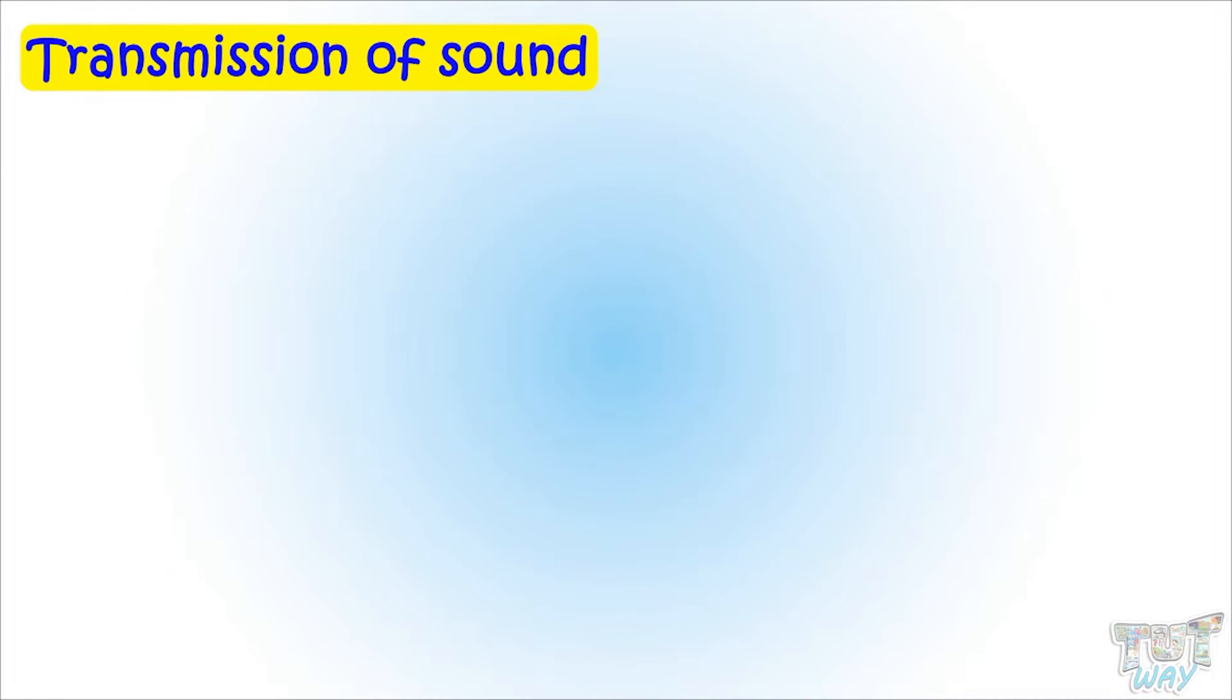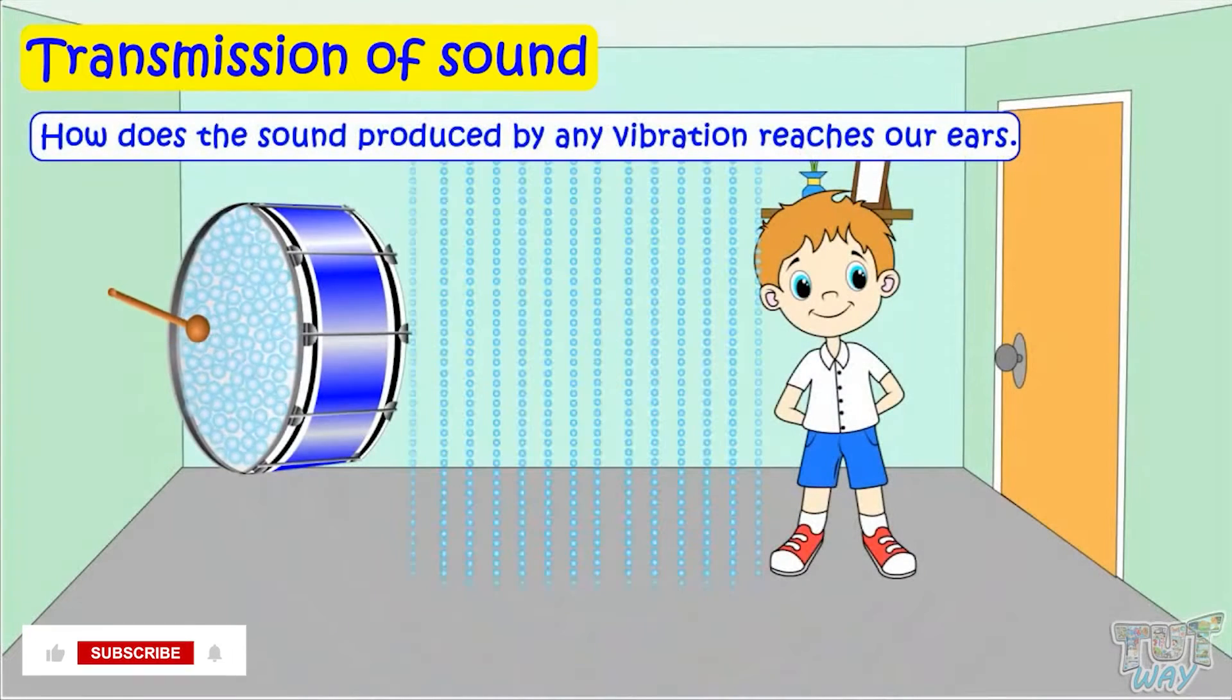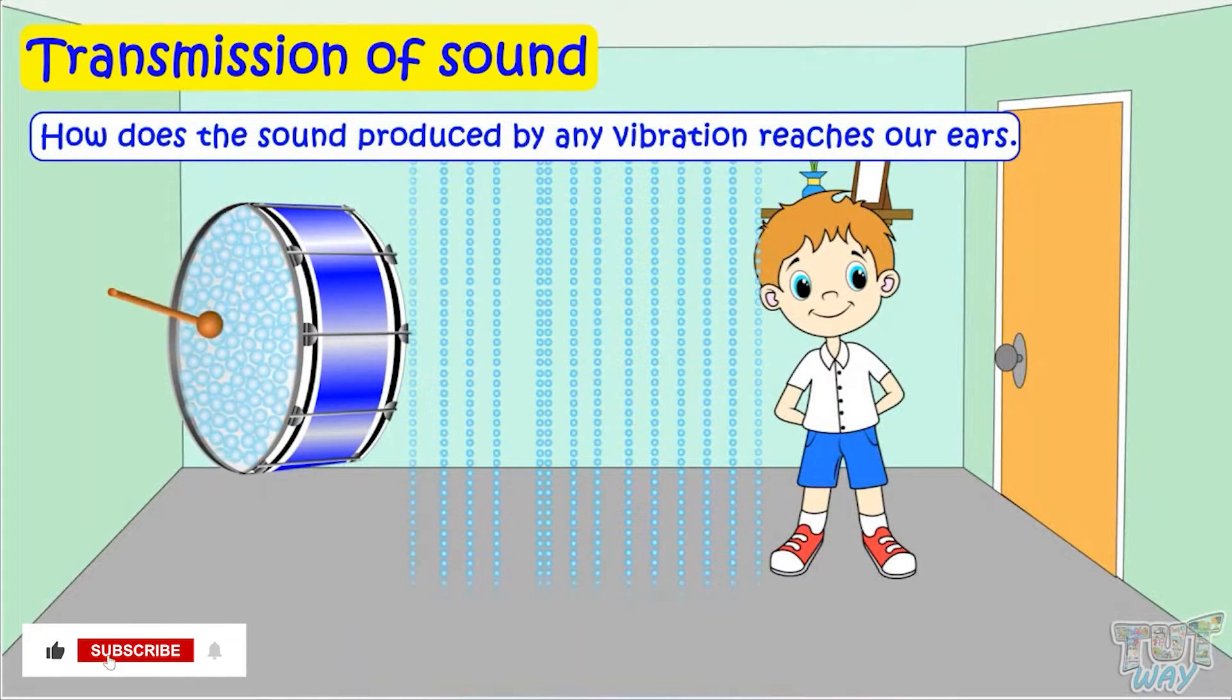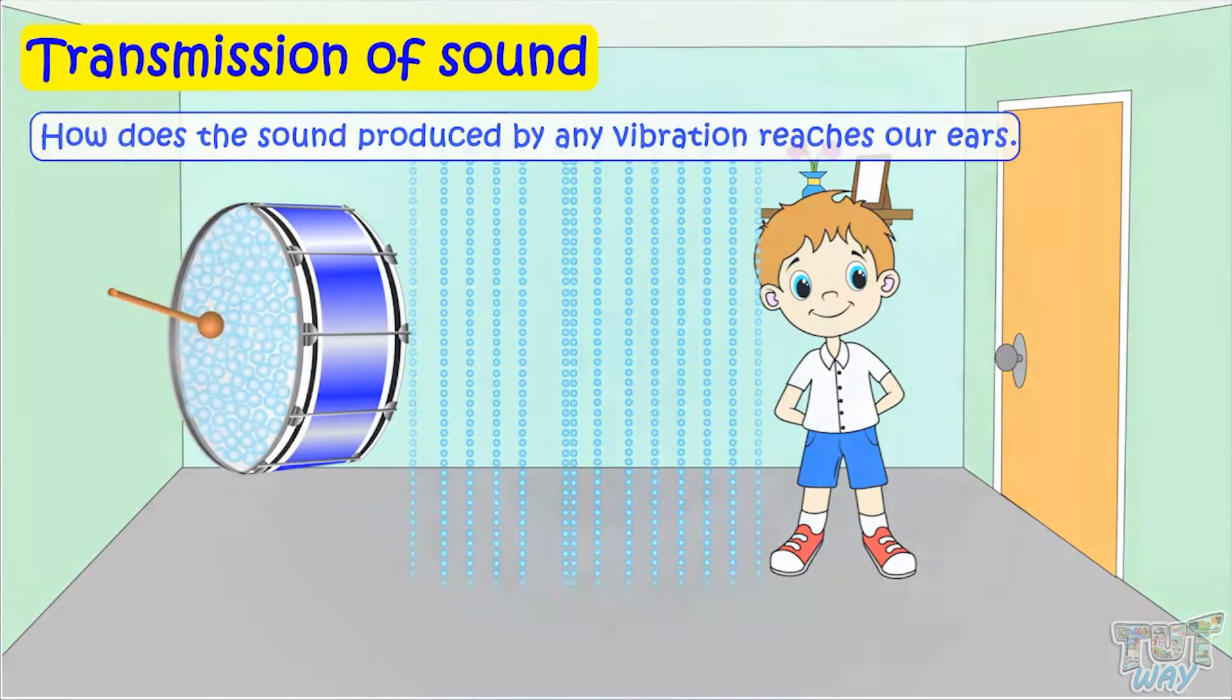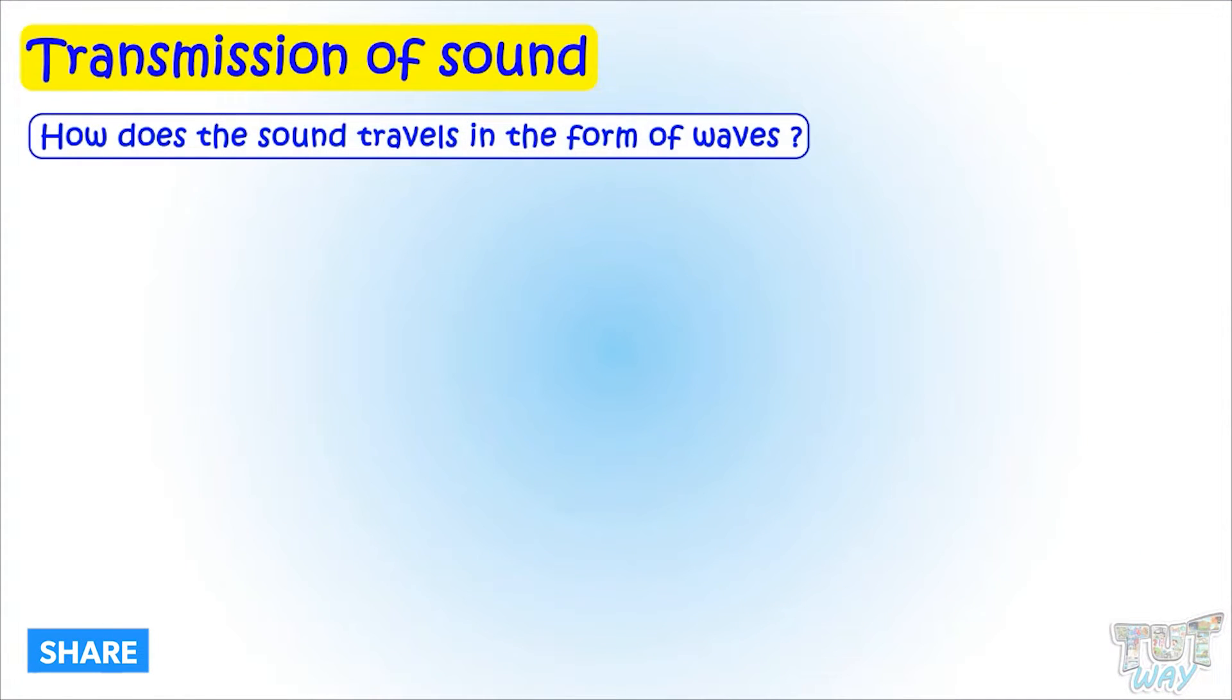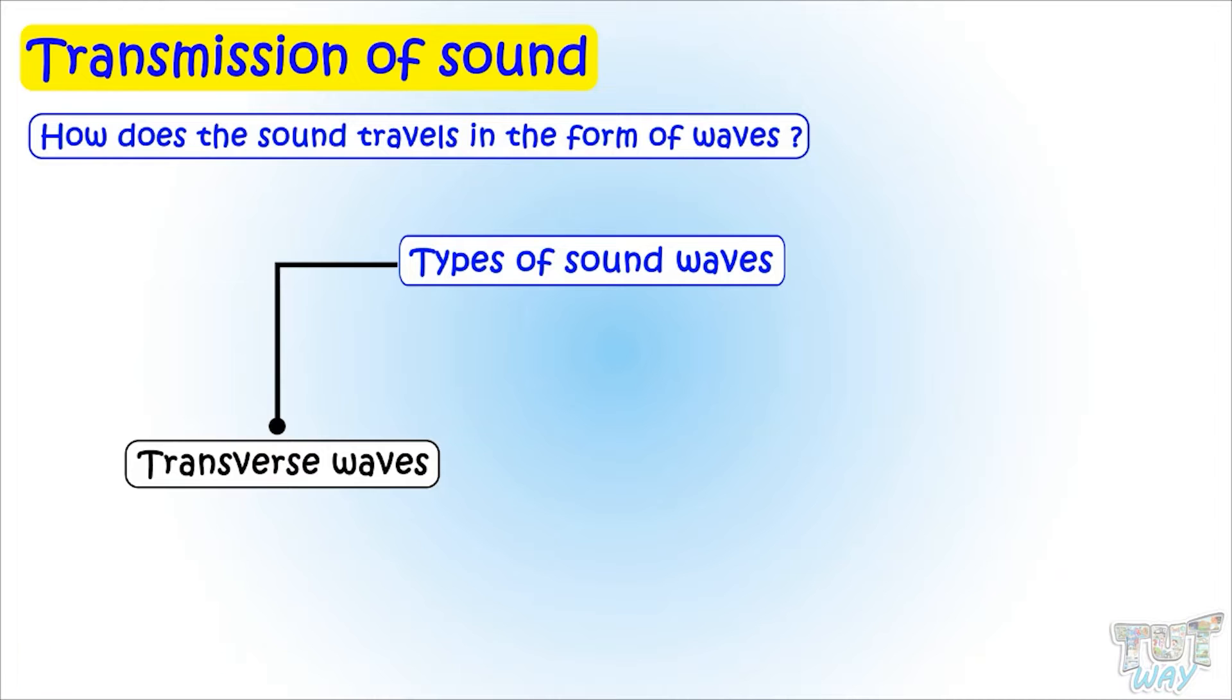Now we have to see how does the sound produced by any vibration reach our ears, or how does sound travel? Sound travels in the form of waves. And there are two types of waves: transverse waves and longitudinal waves.